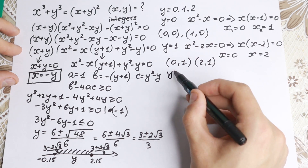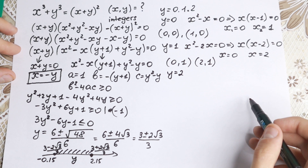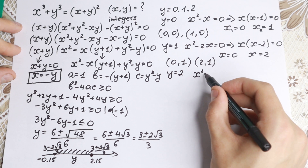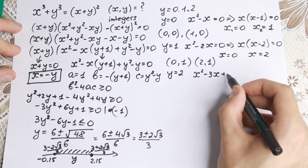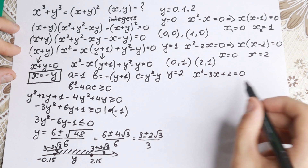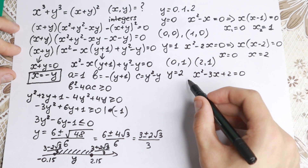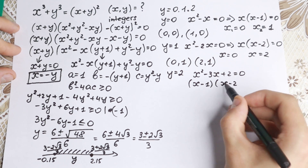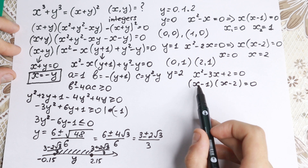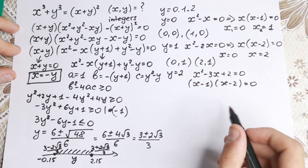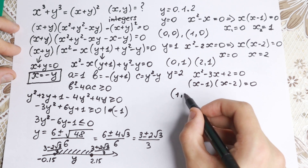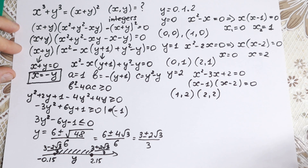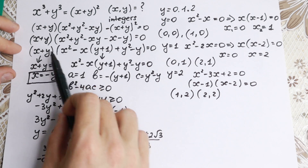The last case: y equal to 2. If y equal to 2, we have the equation x² minus 3x plus 2 equal to 0. This quadratic equation we can easily factor using Vieta's theorem: (x minus 1)(x minus 2) equal to 0. So roots are 1 and 2. We can write our pairs (1, 2) and (2, 2). So we find our six pairs.